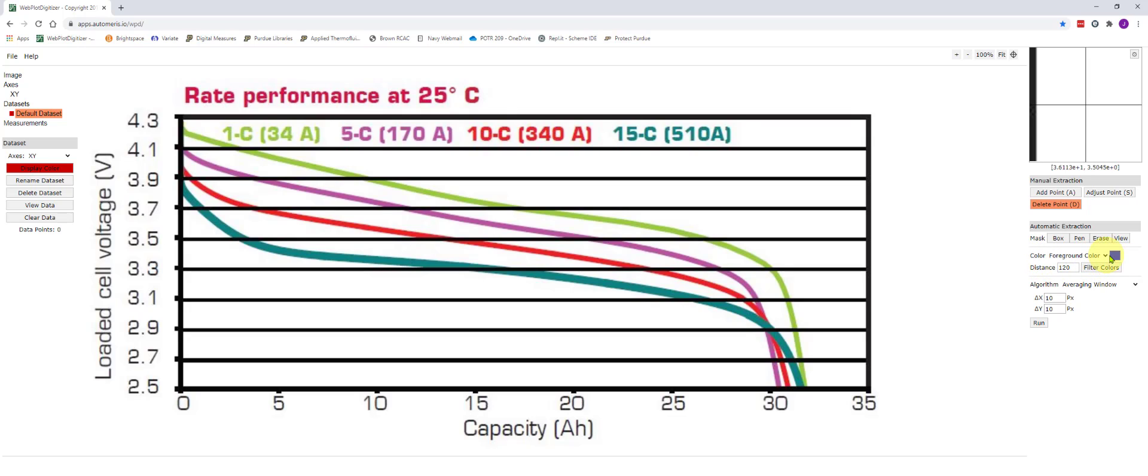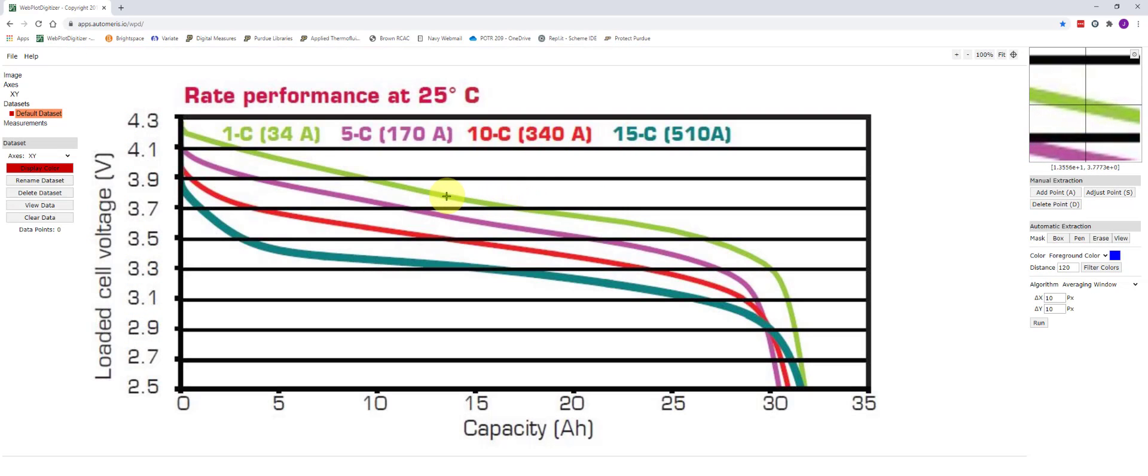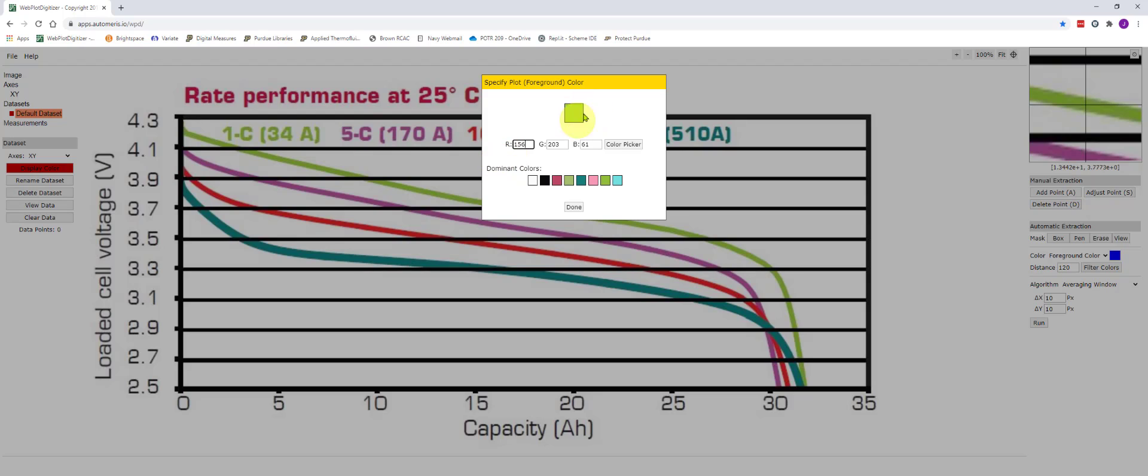So first I'm going to click on the foreground color over here. It's currently shown in blue. And I'm going to select color picker and I'm going to pick anywhere on my chart that has the green color. So now I've got green selected. Click done.